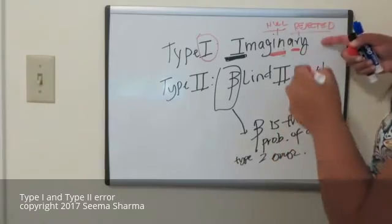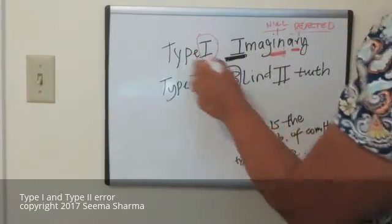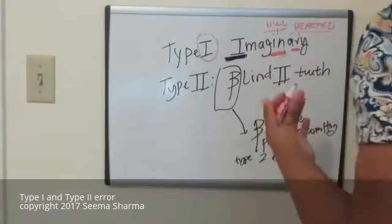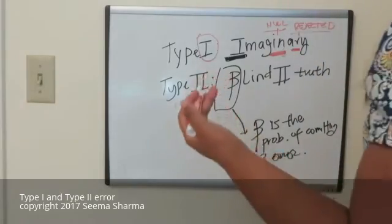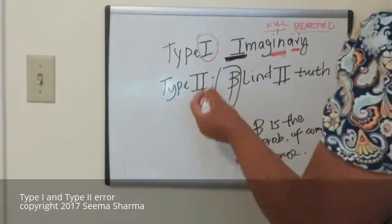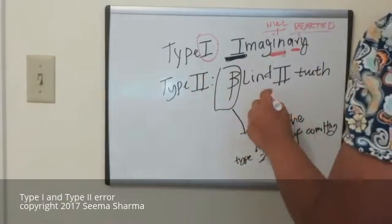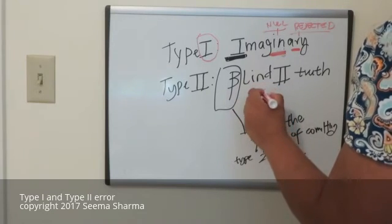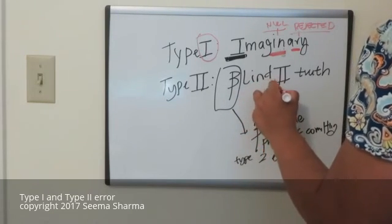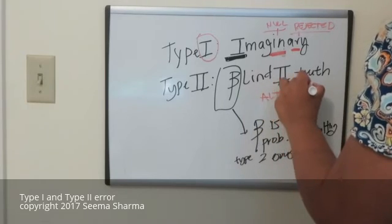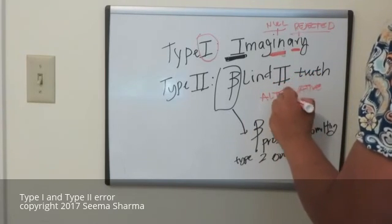Therefore, if you're able to remember this for Type I, you'll then know by exclusion that Type II means you rejected the alternative hypothesis when you made your error.